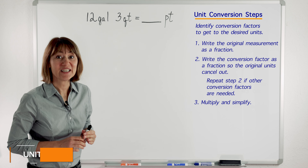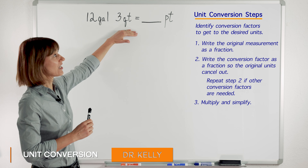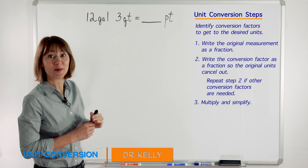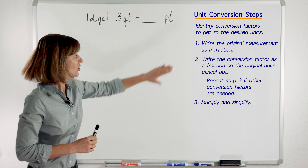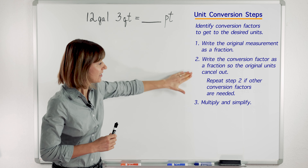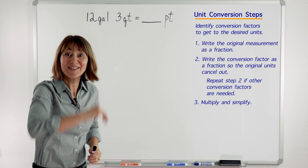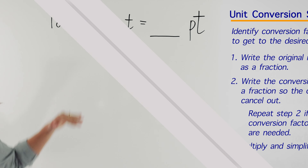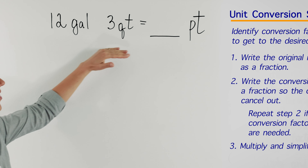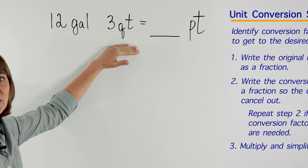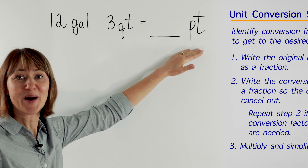I'm glad you're here. We are going to solve this conversion problem in two different ways so you can see how these steps work. Here we have 12 gallons and 3 quarts and we need to change it to pints.